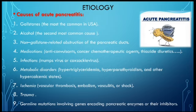Other causes of acute pancreatitis include ischemia — such as vascular thrombosis, embolism, or shock — as well as trauma. An important cause is germline mutation in genes that encode pancreatic enzymes, which can lead to overproduction of pancreatic enzymes and subsequent autodigestion.